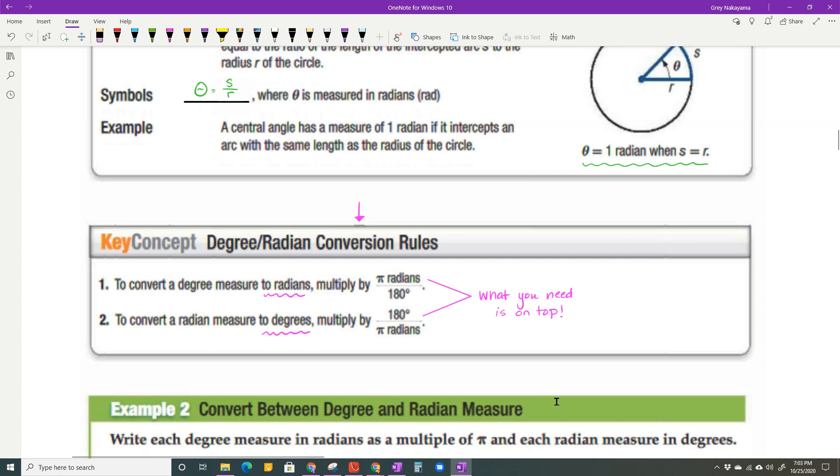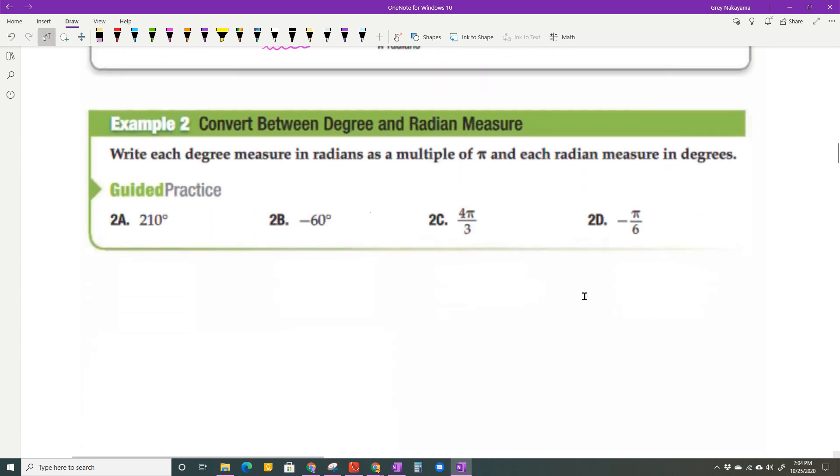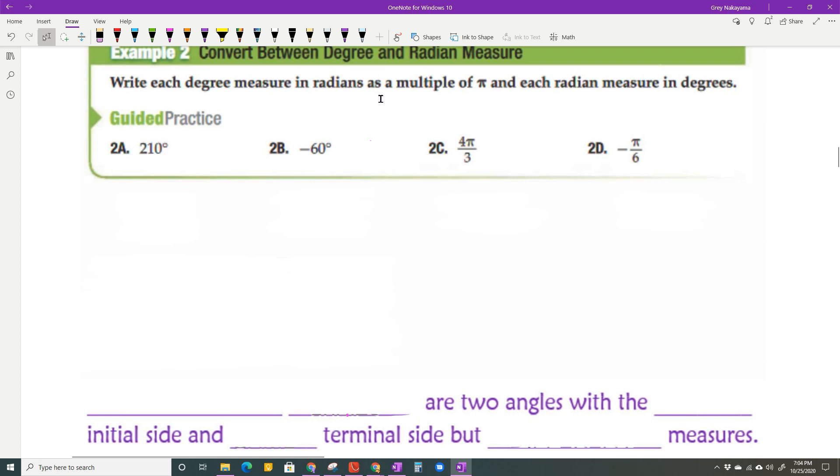Whatever you need when you're multiplying is going to go on top. So what I'm going to show you when I do these examples, write each degree measure in radians as a multiple of pi and each radian measure in degrees. So if I have it in degrees, I want to get rid of degrees, which means I'm going to radians. So my pi radians is on top and degrees are on the bottom. And I will tell you all that in most circumstances, I don't think it's the way in delta math, if you do not have a degree symbol, then it's radians. Radian is the one unit of measure in math. We don't have to put a symbol with it. So it is understood that if there's nothing there, it's supposed to be radians.